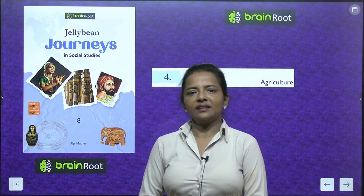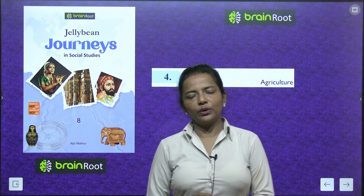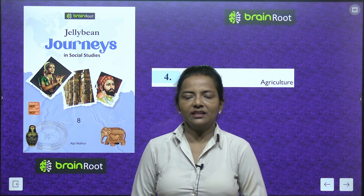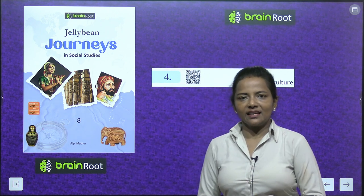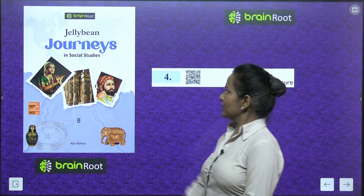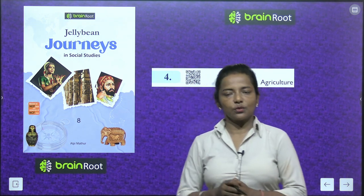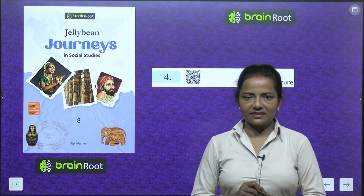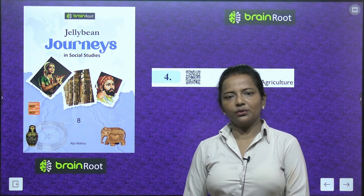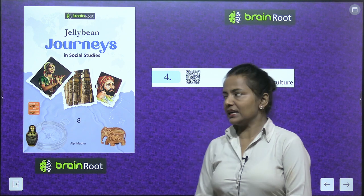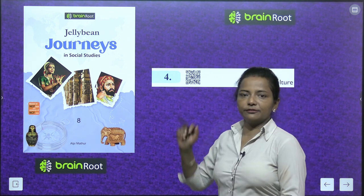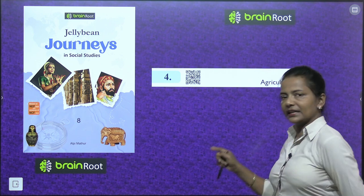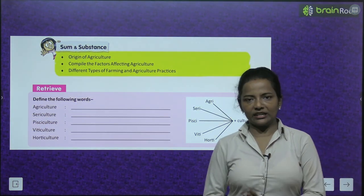Hello dear genius friends, a very warm welcome to your social studies class with your learning pari Rajita. Today let's start the book Jellybean Journeys in Social Studies class 8 by Brain Root series. The lesson we are going to do today is chapter number 4: Agriculture. So what do we learn today? What about agriculture?